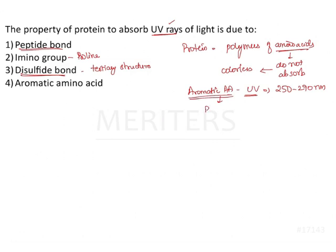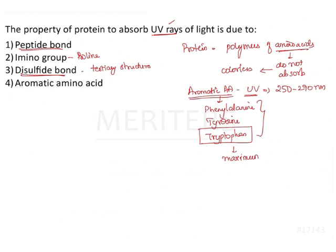The various aromatic amino acids are phenylalanine, tyrosine, and tryptophan. Among these three, tryptophan has the maximum absorption capacity at a wavelength of 280 nanometers. So they absorb at 280 nanometers, and the maximum absorption is seen with tryptophan among the aromatic amino acids.